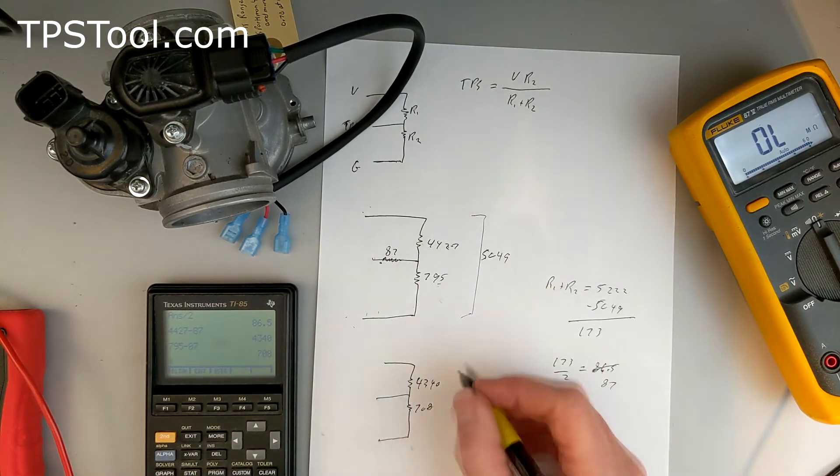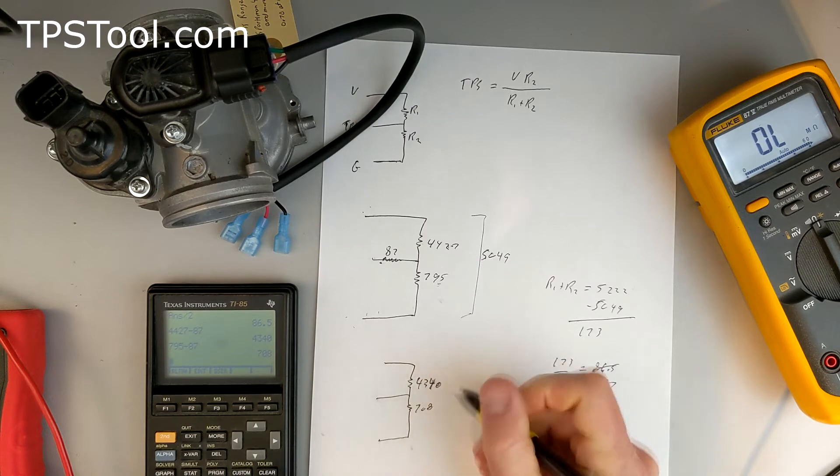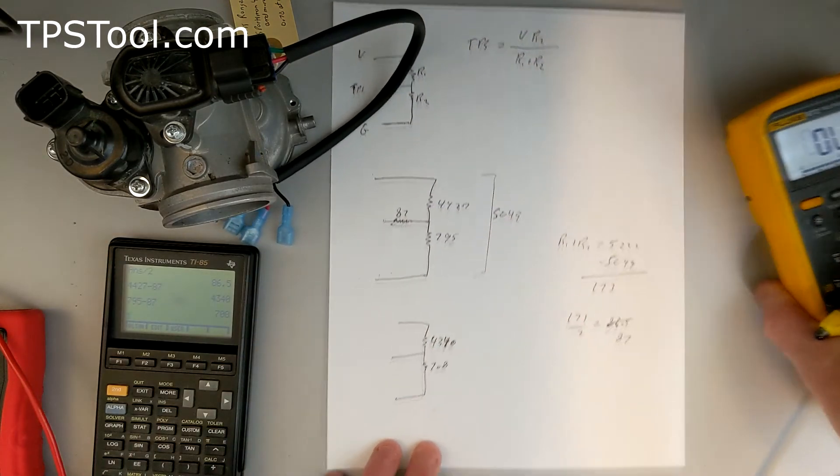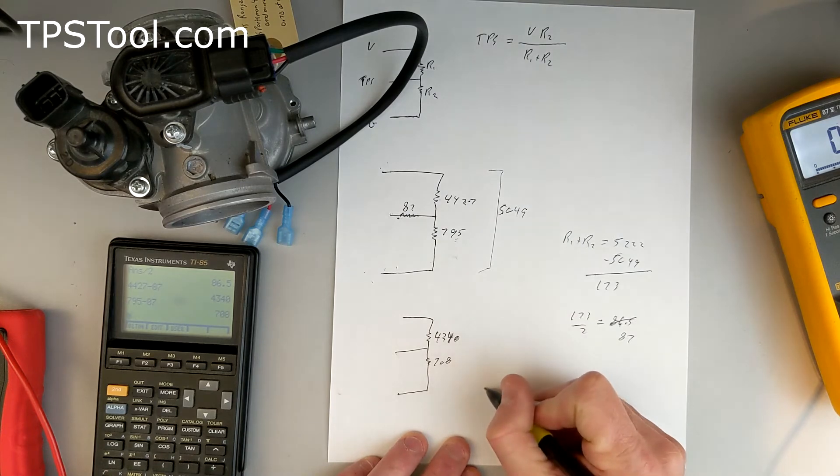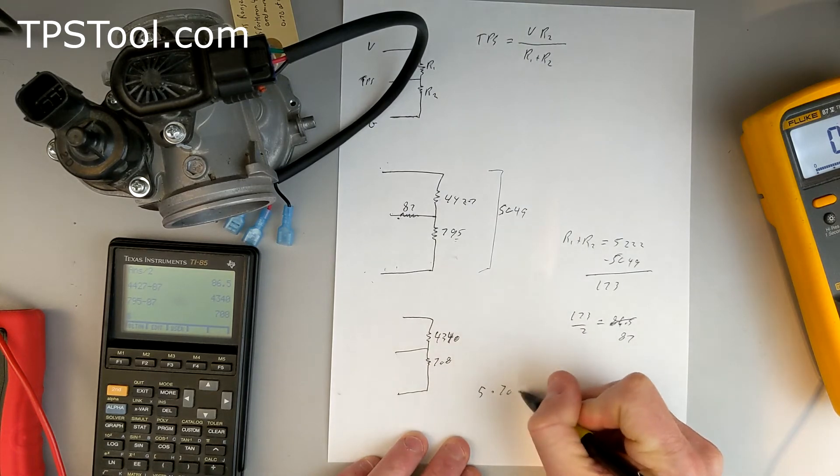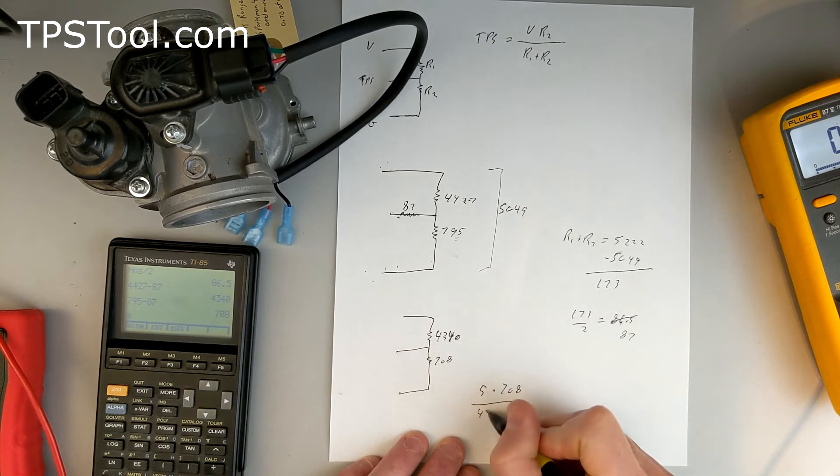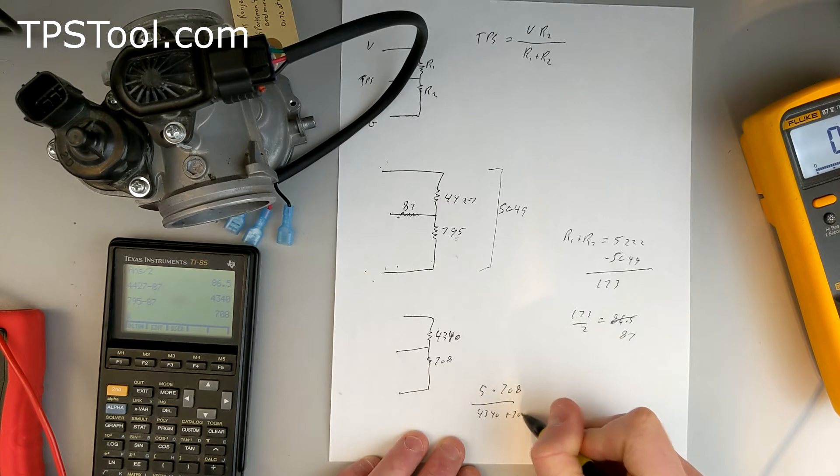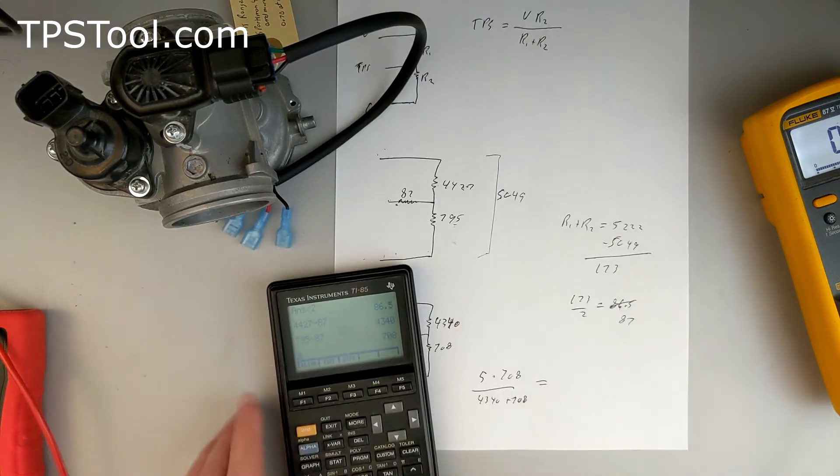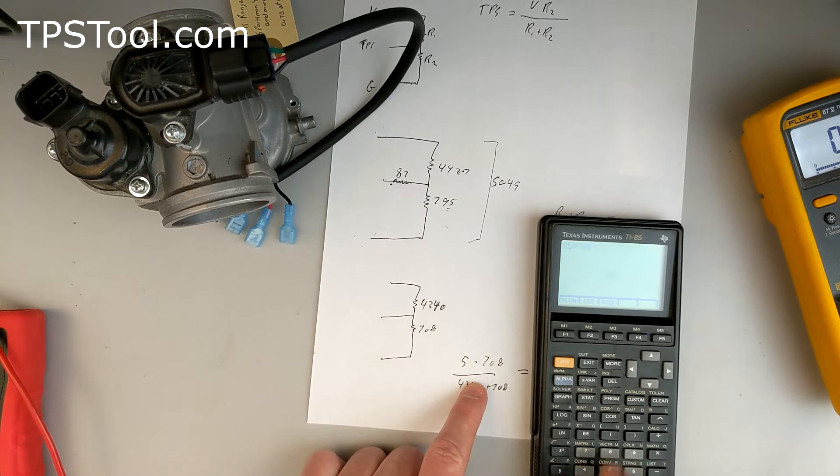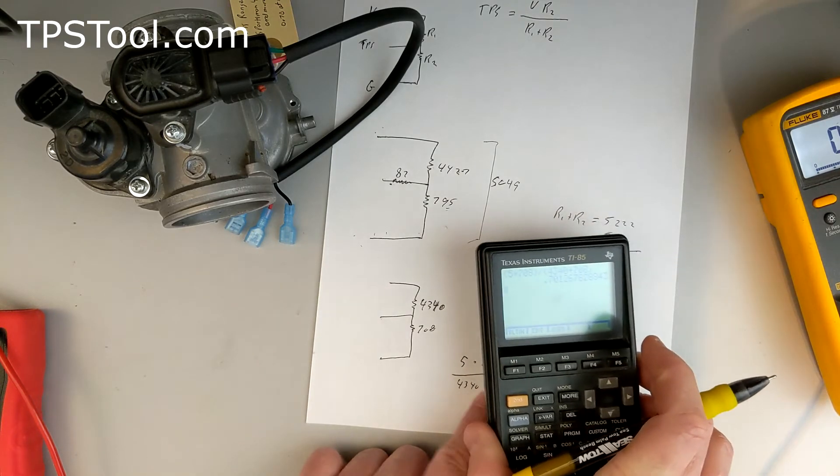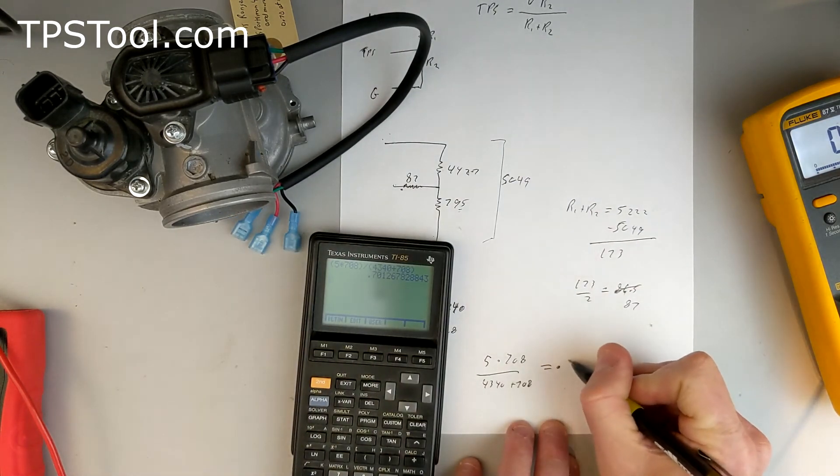So, all we've done is taken this resistor out. So, we've got 4340 and 708. My writing is horrible. Okay. So, let's see if our math works out. If this works out, we should get 0.46 and 0.7. So, in the case of 5 volts input, our TPS should be 5 volts times 708, divided by 4340 plus 708. Let's see what we get. This should be 0.7 volts. So, let me clear that. We've got, up here, 5 times 708 divided by 4340 plus 708. Look at that. 0.70.